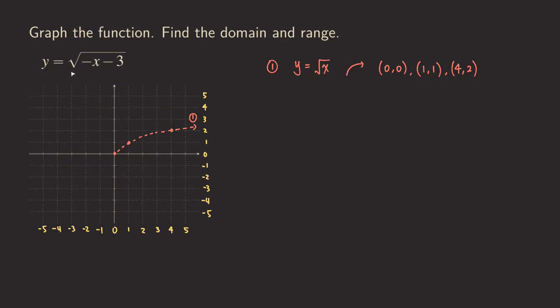Hello everyone, today let's talk about graphing the square root function, y equals square root of negative x minus 3. The first thing we are going to do is to rewrite it in a form that makes it easier for us to apply the transformations.